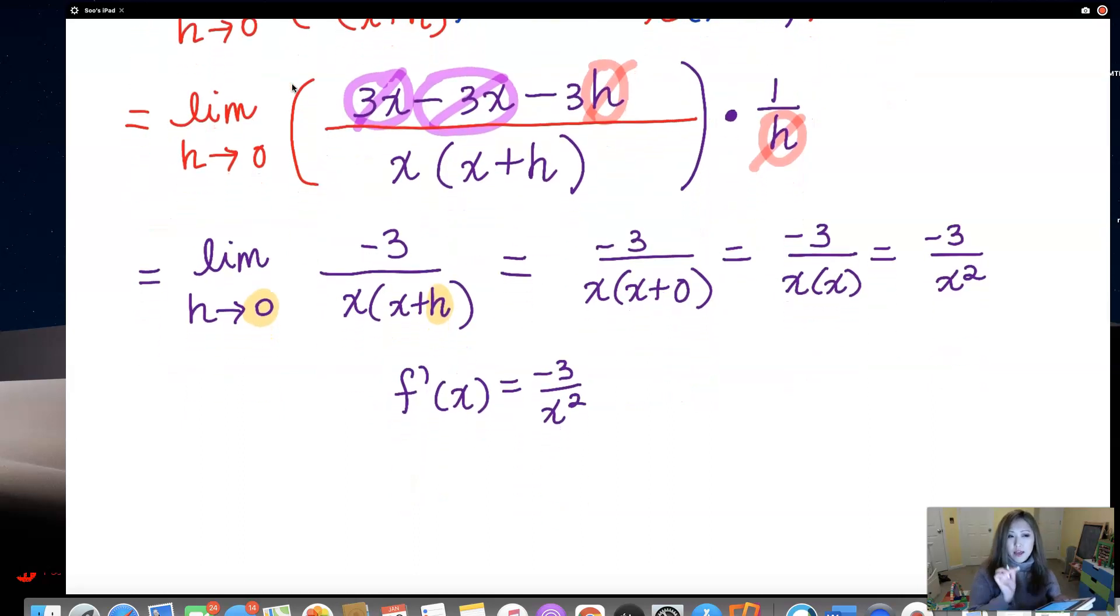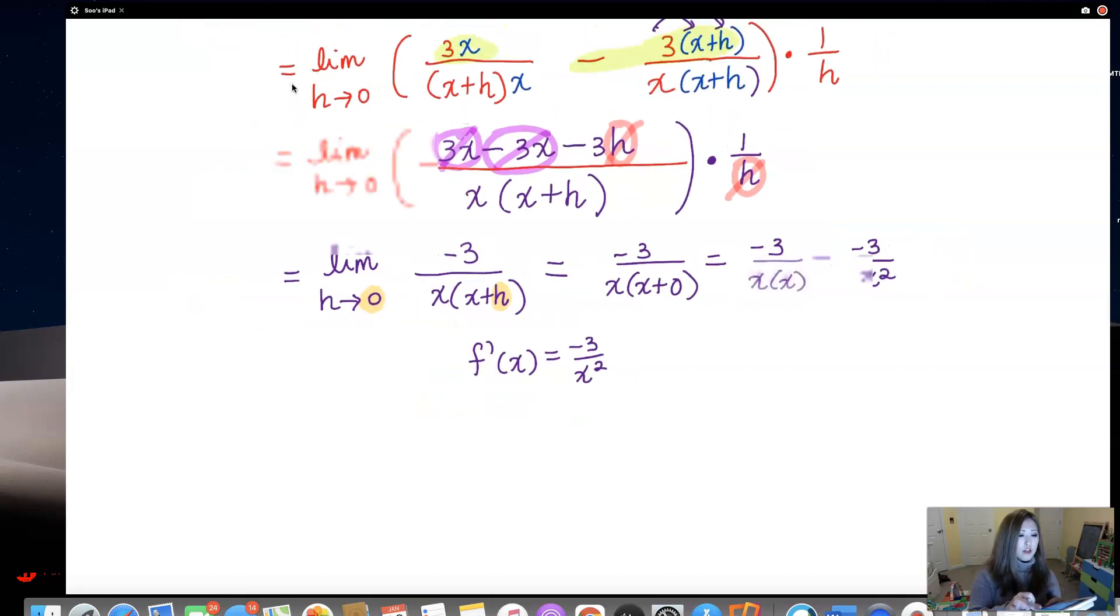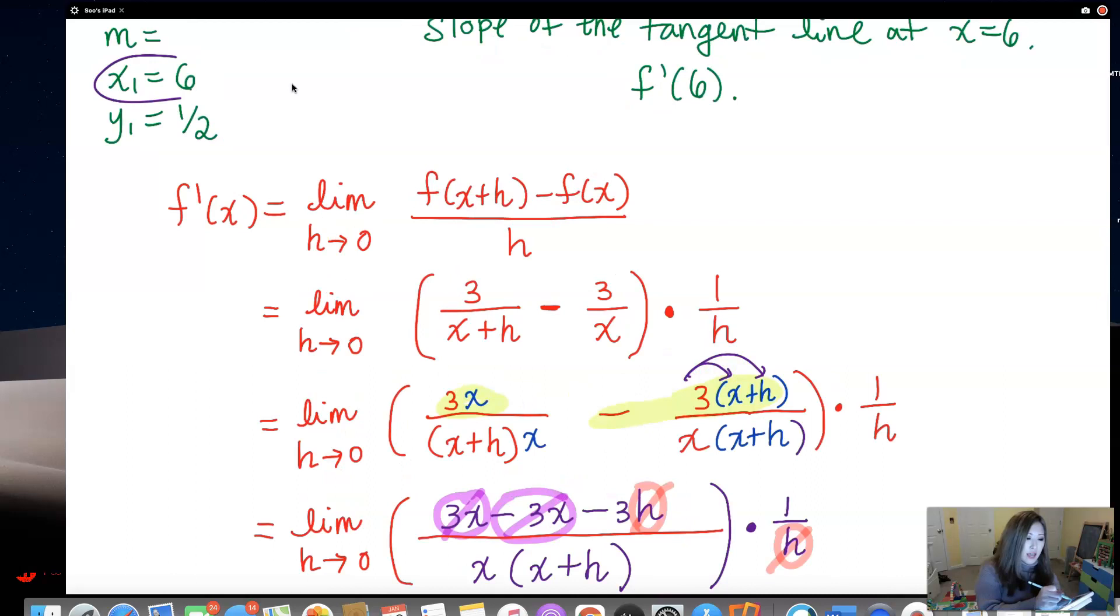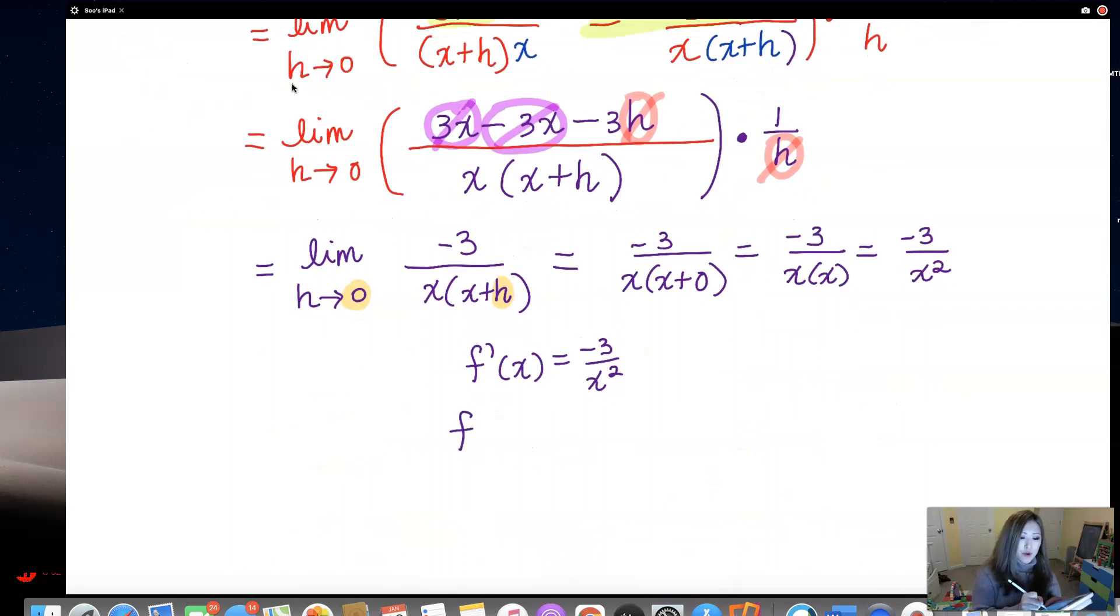We just found the f prime of x and that is negative 3 over x squared. This is the derivative and this is going to give us the equation, oh not equation, slope of a tangent line. Slope of a tangent line. At what x value? What was the x value that we were thinking about plugging in? Let me go back up to find it. Oh here it is, x equals 6. So plug in 6 into your derivative function. What is f prime of 6? That is negative 3 over 6 squared, negative 3 over 36. So that fraction reduces to negative 1 over 12. What we just found is the slope. Slope of the tangent line at x equals 6.